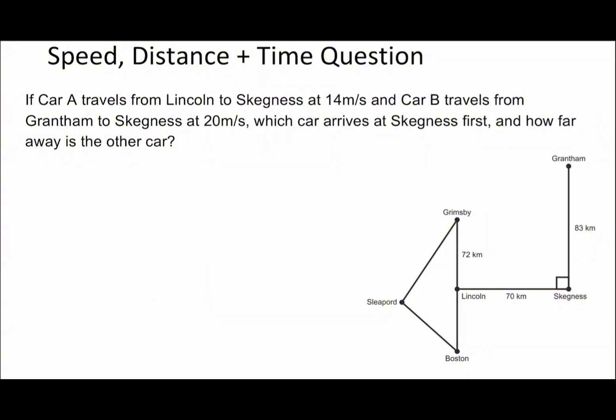If Car A travels from Lincoln to Skegness at 14 m/s and Car B travels from Grantham to Skegness at 20 m/s, which car arrives at Skegness first and how far away is the other car? Proper mean question.